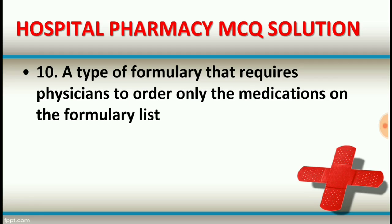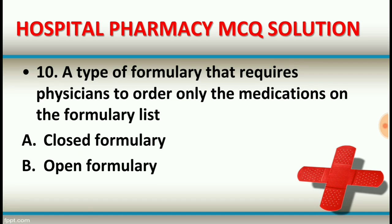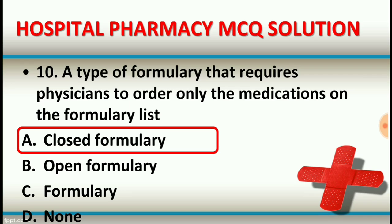Question number ten: A type of formulary that requires physicians to order only the medications on the formulary list is called — option A: closed formulary. Option B: open formulary. Option C: formulary. Option D: none of these. The right answer is option A, closed formulary — which requires physicians to prescribe only medications listed on the formulary.